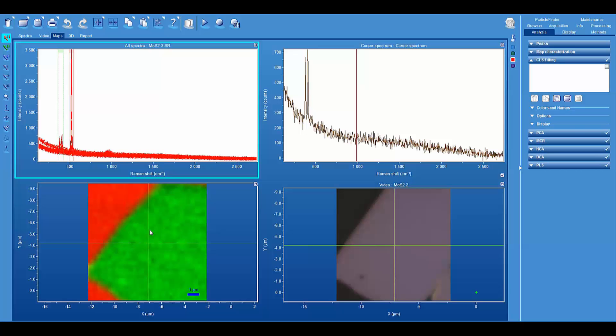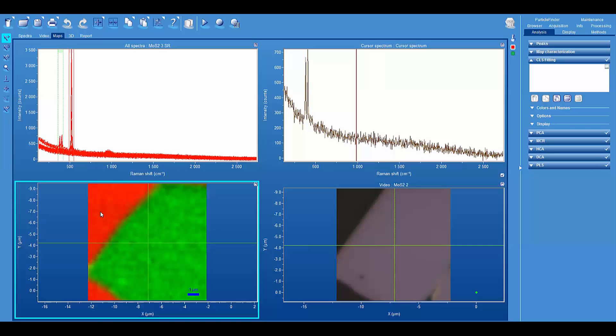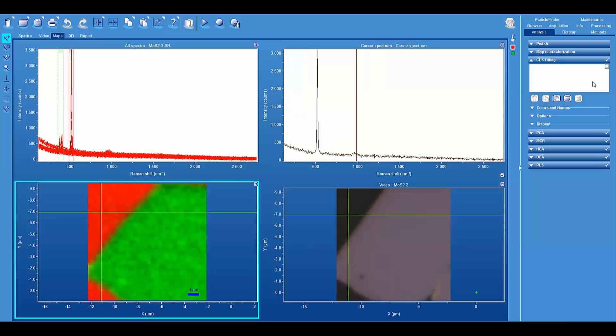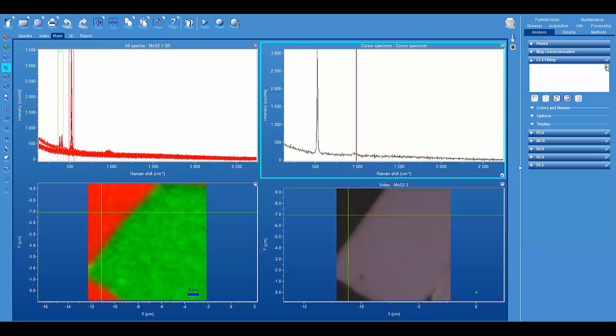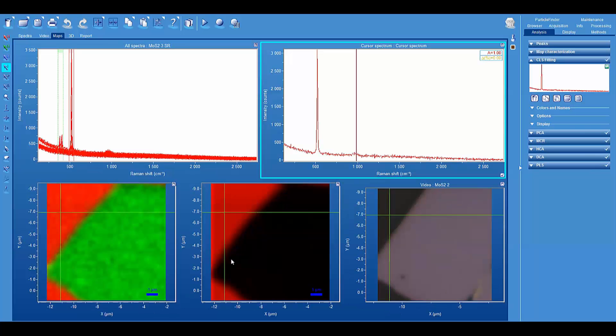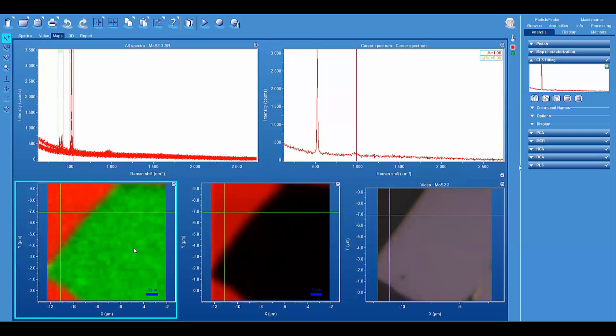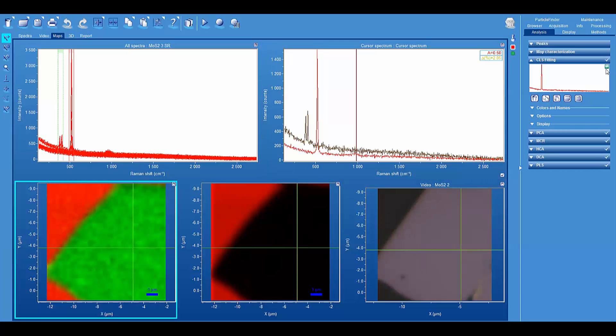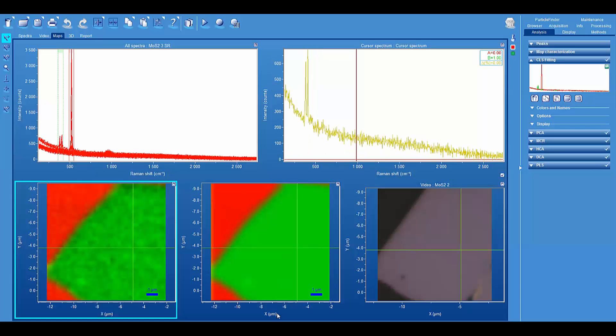Okay, so now we again generate our classical least squares image. Okay, there's our silicon component. So now our molybdenum disulfide component. And again, this is for 50 millisecond per point integration time. So that's pretty fast imaging.